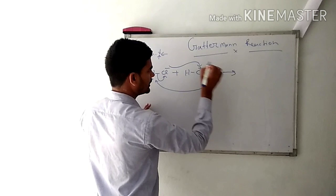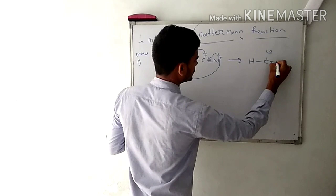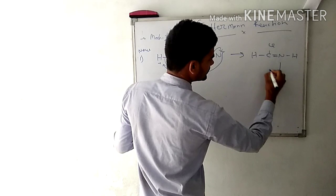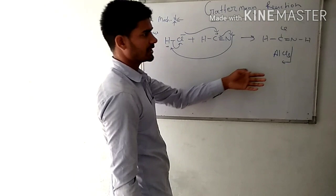Now a Lewis acid acts as a catalyst. Aluminium chloride comes here and abstracts the electron from this chlorine to form our electrophile.